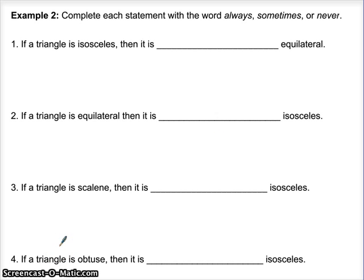All right, so let's do this. If the triangle is isosceles, then it is always sometimes never equilateral. Well, it could be an equilateral. We already talked about that, so that's okay. But does it have to be equilateral? No. It could just be isosceles. If it's equilateral, it has to be isosceles. If it's scalene, it wouldn't have any sides equal. And isosceles requires that it has to have at least two, so that's impossible.